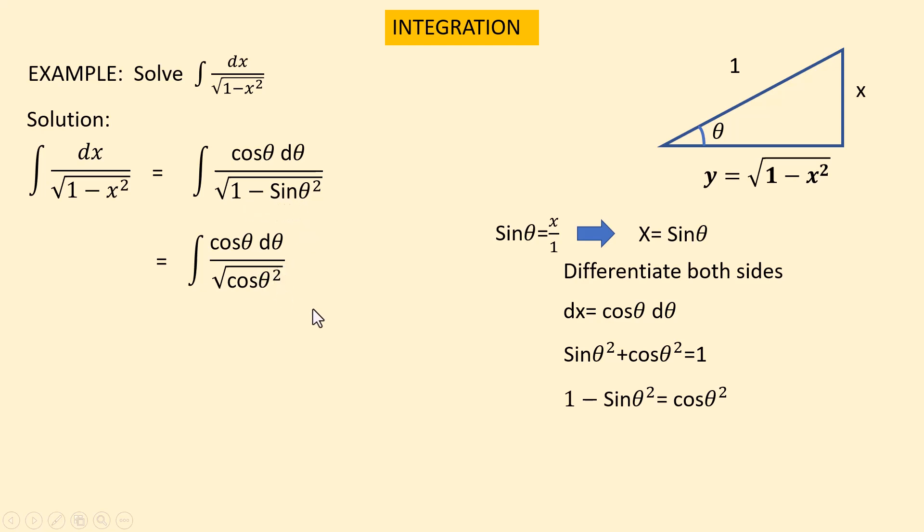Now these two cancel the square root. It becomes cosine theta d theta over cosine theta. These cosine thetas cancel each other, so it becomes the integration of d theta.